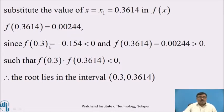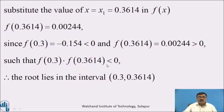Since f(0.3) = −0.154, which is less than 0, and f(0.3614) = 0.00244, which is greater than 0, such that f(0.3) × f(0.3614) < 0. Therefore, the root lies in the interval [0.3, 0.3614].